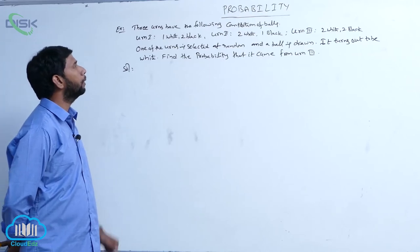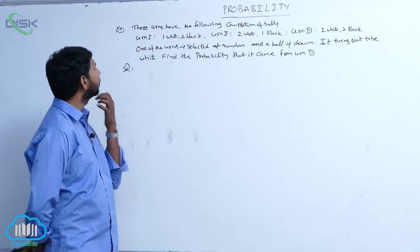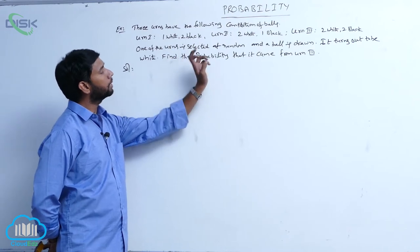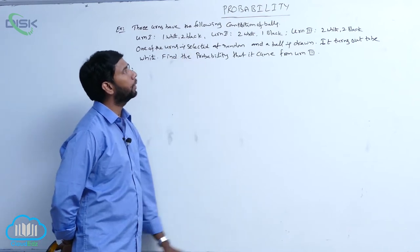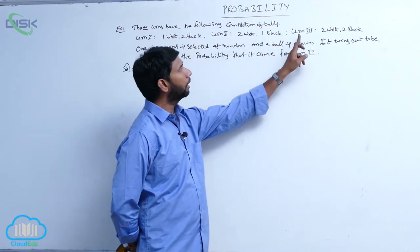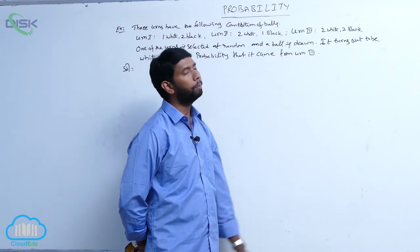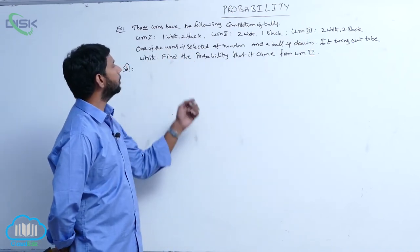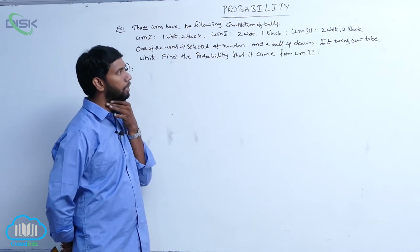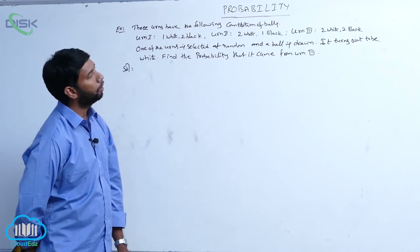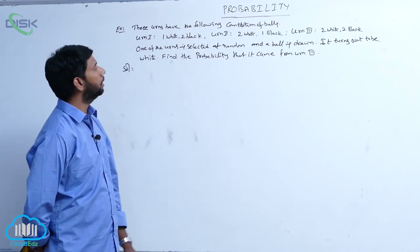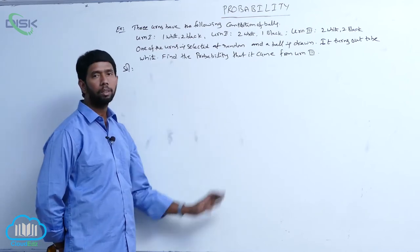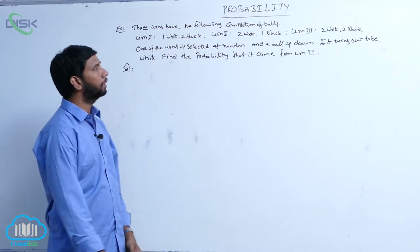Three urns have the following composition of balls: the first contains one white ball and two black balls, the second contains two white balls and one black ball, and the third contains two white balls and two black balls. One of the urns is selected at random and a ball is drawn — it turns out to be white. Find the probability that it came from the third bag.